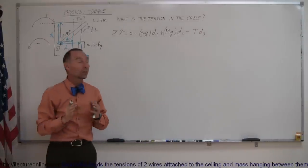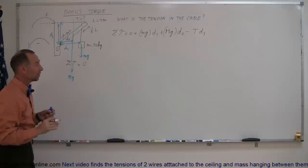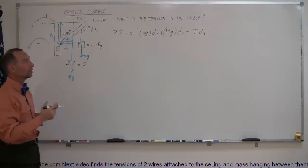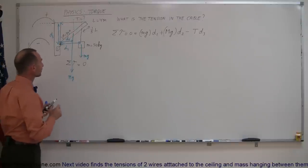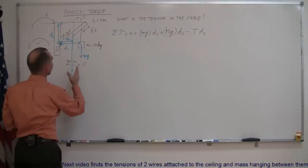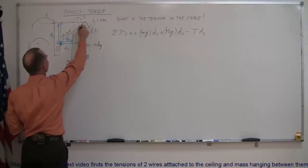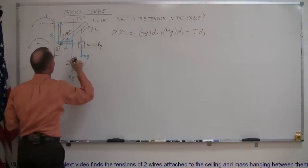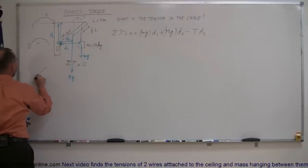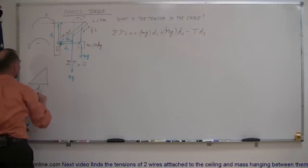Now I know I have the correct equation on the board. I simply have to find out what d1, d2, and d3 are equal to. So d1 is this distance right here — I have a triangle. Let me draw the triangle on the side. This here is distance one.